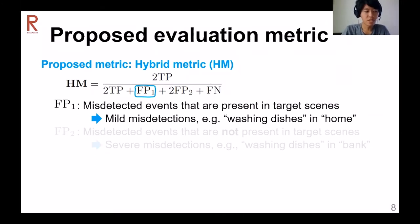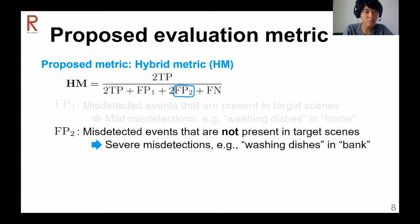This is the formulation of the proposed metric, the Hybrid Metric, or HM. The HM utilizes two types of false positives. First, FP1: misdetections that are present in target scenes — in other words, mild misdetections. For example, a sound event seen in a home scene. On the other hand, FP2: misdetections that are not present in target scenes — that is, severe misdetections. For example, a sound event seen in a bank scene.